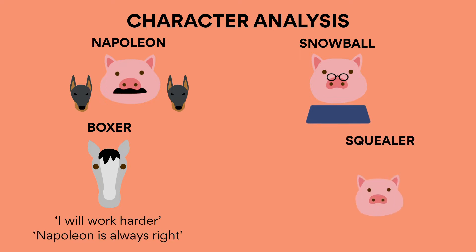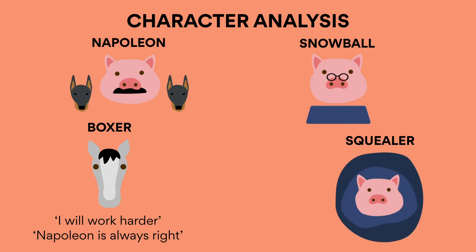Squealer. Manipulative and highly persuasive, he spreads Napoleon's propaganda throughout the farm to intimidate uneducated animals into supporting Napoleon's ideas and policies. Orwell uses the character of Squealer to warn against politicians' deliberate manipulation of mass media in order to gain social and political control.